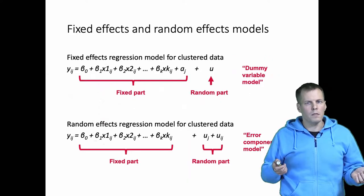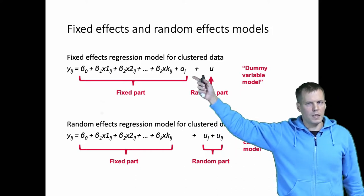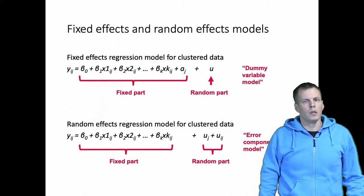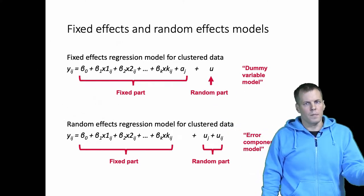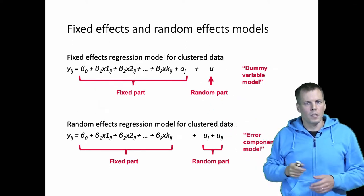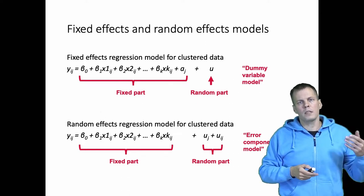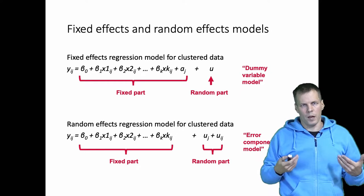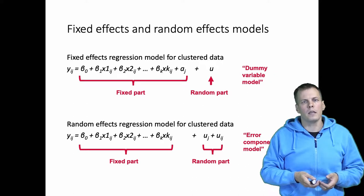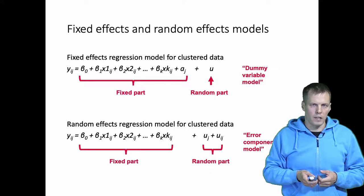In the fixed effects model, we estimate a specific value for each cluster. So AJ, the unobserved heterogeneity, is in the fixed part and only the error term goes to the random part. This is sometimes called the dummy variable model, because the easiest way to implement this approach — not the most efficient way, but the easiest to understand — is by adding a dummy variable for each cluster in the data.